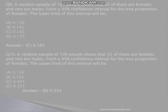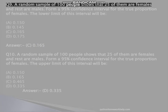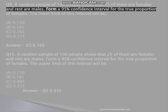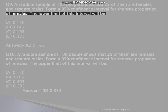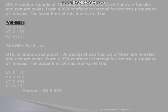Q9. A random sample of 100 people shows that 25 of them are females and rest are males. Form a 95% confidence interval for the true proportion of females. The lower limit of this interval will be: A, 0.150, B, 0.145, C, 0.165, D, 0.175. Answer: C, 0.165.